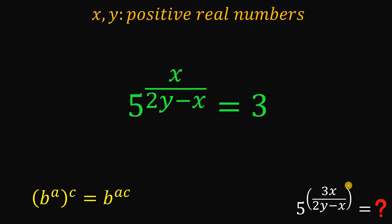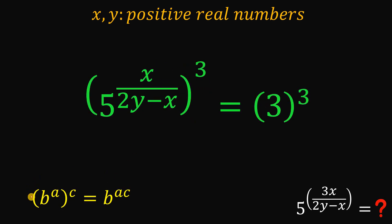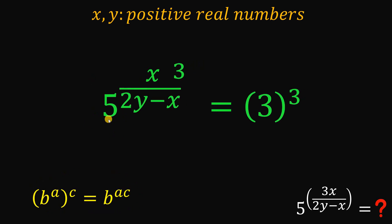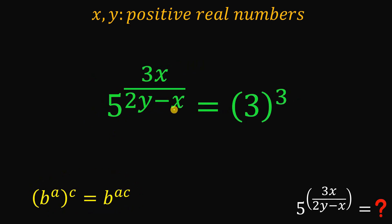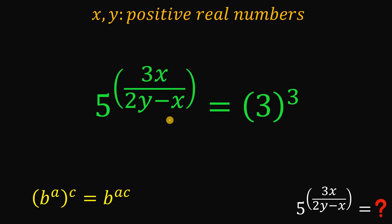We want 5 raised to the power of 3x over 2y minus x. The only difference is we need a 3 beside x, so let's raise both sides to the power of 3. Using the law of exponents again, the left hand side becomes 5 raised to the power of 3x over 2y minus x — exactly the expression we want — and the right hand side becomes 3 raised to the power of 3, which equals 27.